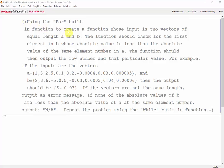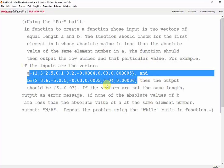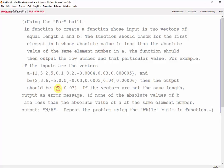Using the for built-in function, create a function whose input is two vectors of equal length a and b. The function should check for the first element in b whose absolute value is less than the absolute value of the same element number in a. The function should then output the row number and that particular value. For example, if the inputs are the vectors a and b, then the output should be 6 and negative 0.03.